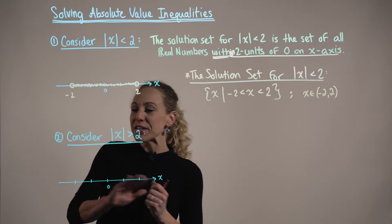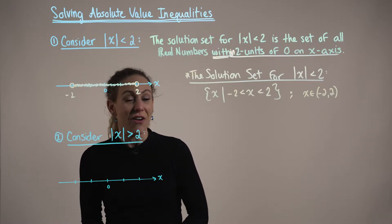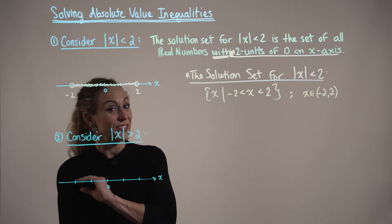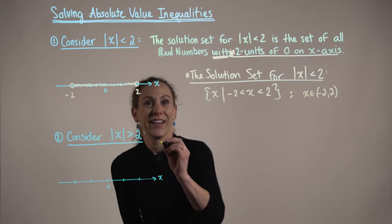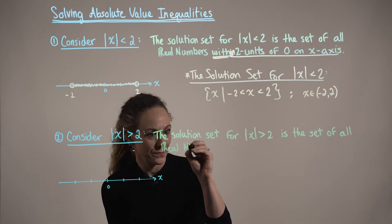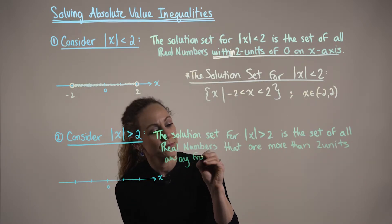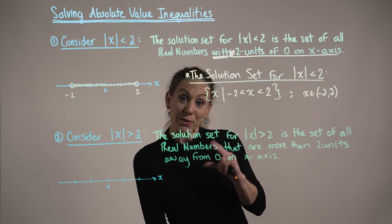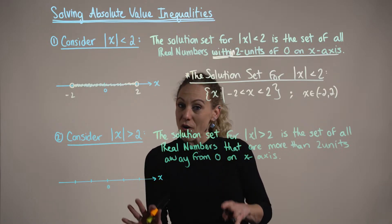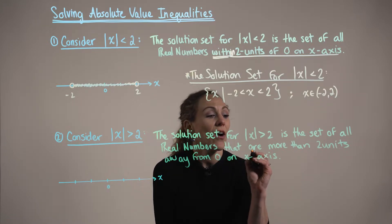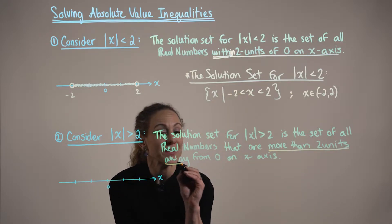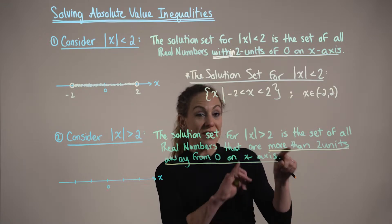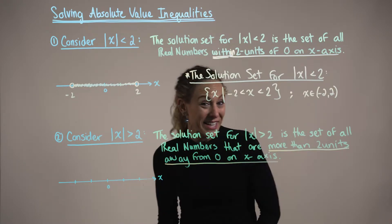Now what happens if we switch the direction of our inequality and consider the absolute value of x being strictly greater than 2? The solution set for the absolute value of x being strictly greater than 2 is the set of all real numbers that are more than 2 units away from 0 on the x-axis or the number line. This is the exact opposite of what we did in case 1.